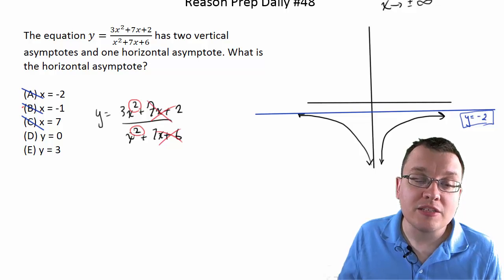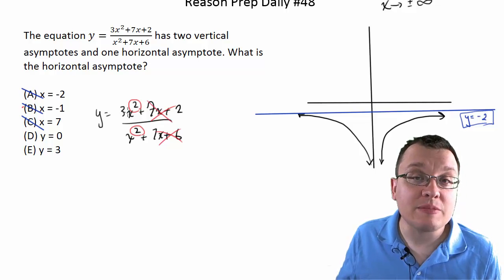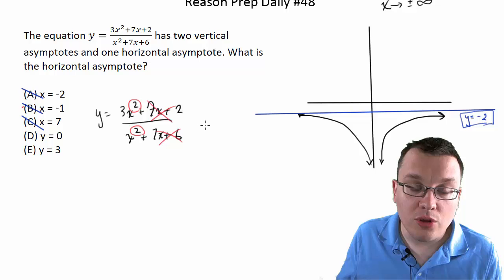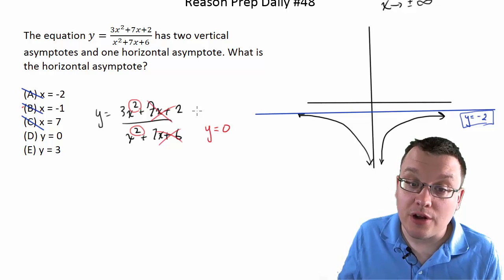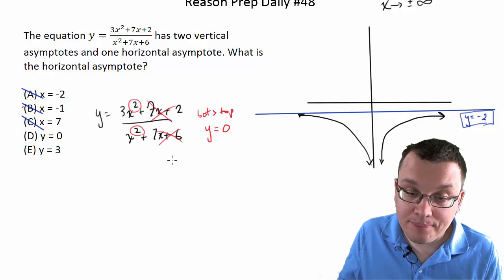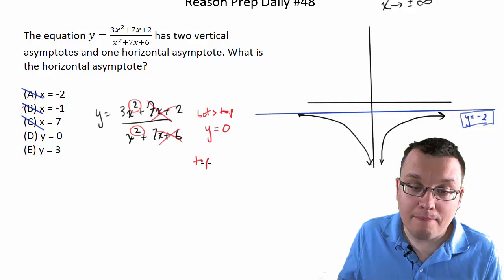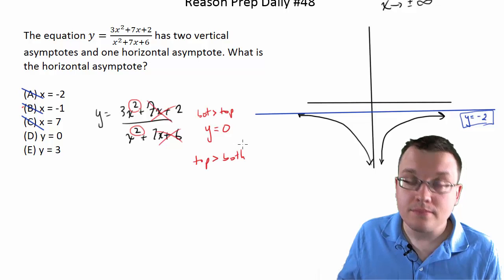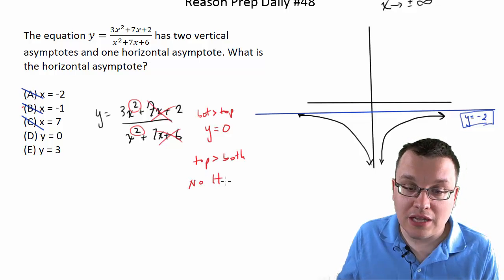If the exponent on the bottom is bigger than the exponent on the top, then what you get is a horizontal asymptote of y equals 0. If the bottom is bigger than the top. If the top is bigger than the bottom, you have no horizontal asymptotes.